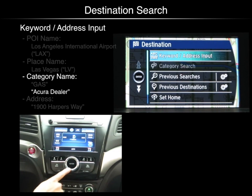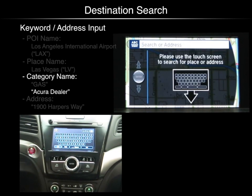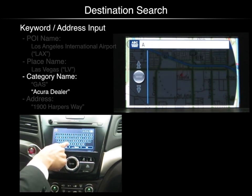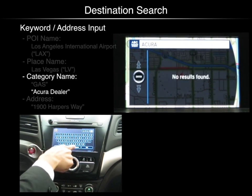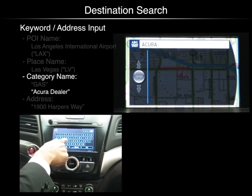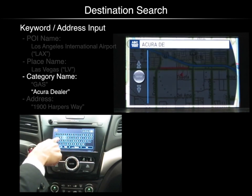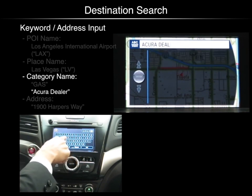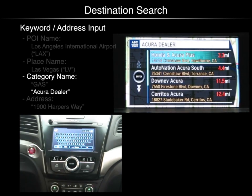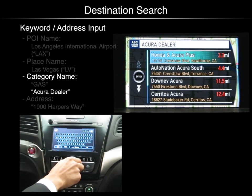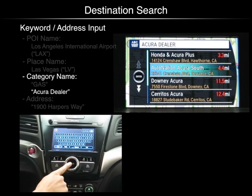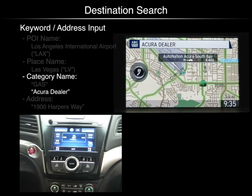To search for an Acura dealer, push enter to select keyword address input. Use the keypad to input the category. Rotate the interface dial to scroll through the list. When you find the one you want, select it by pushing enter.